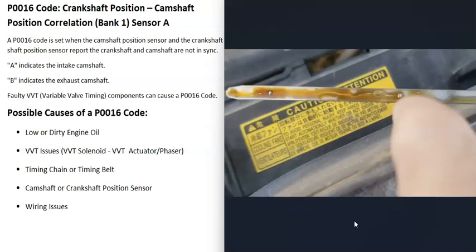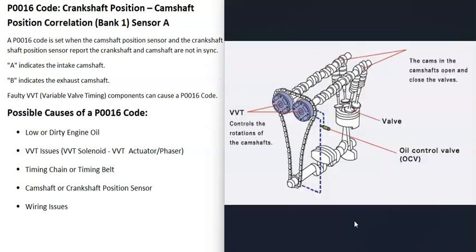The first possible cause of a P0016 code is low or dirty engine oil. Engine oil flows through the variable valve timing system, and if the oil is low or really dirty, it can throw off the variable valve timing and cause issues. Check your engine oil first to be sure it's not low or dirty.